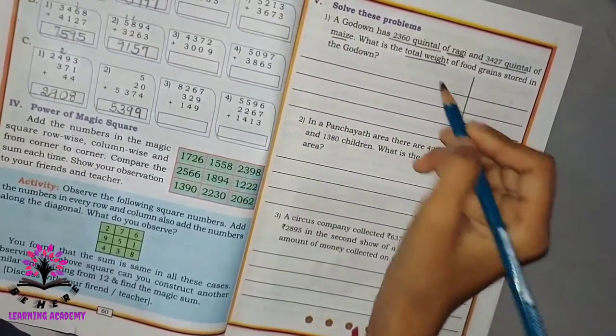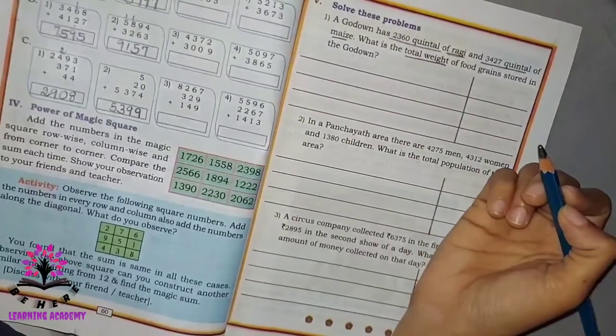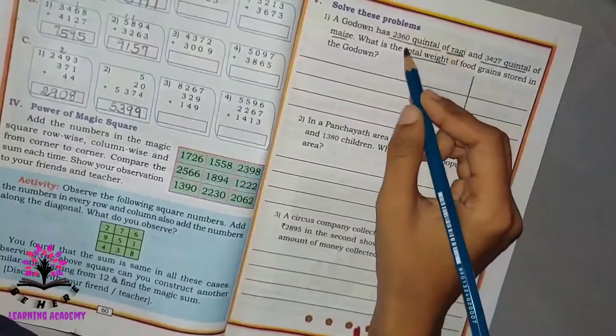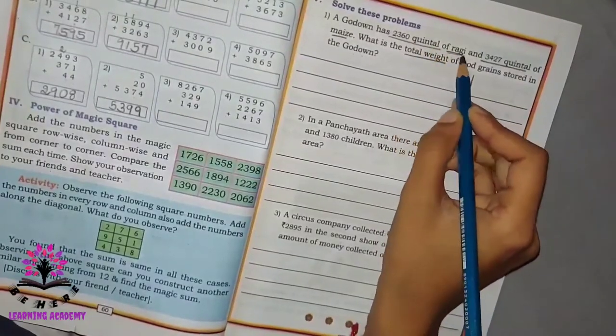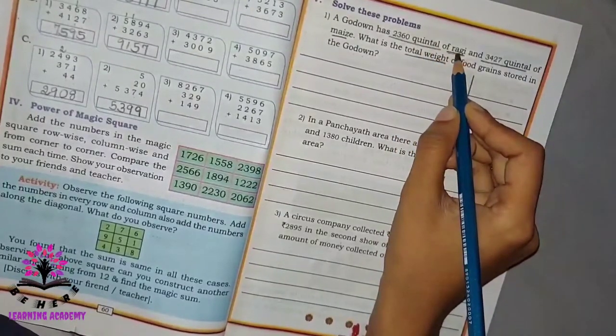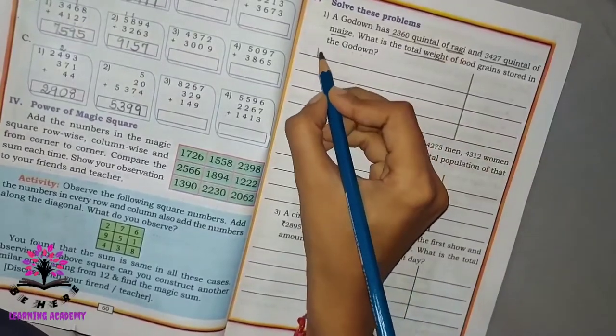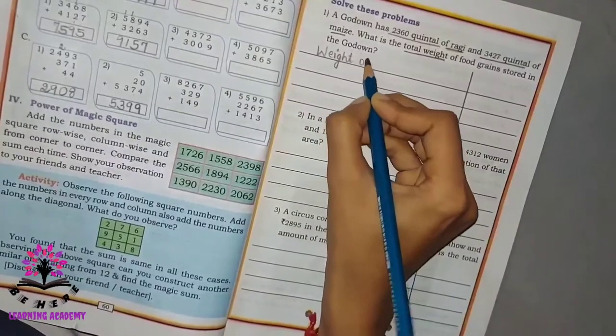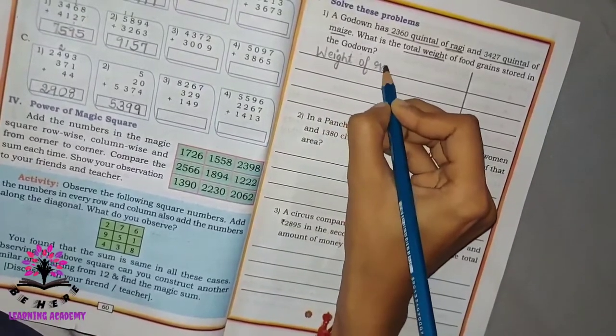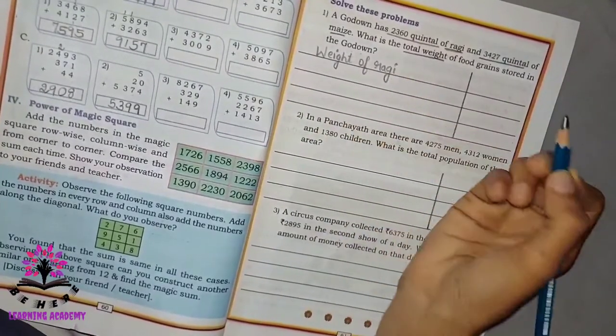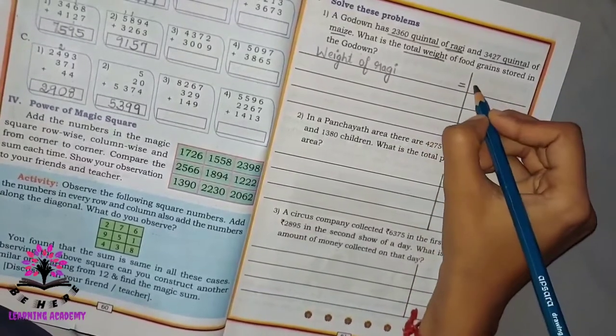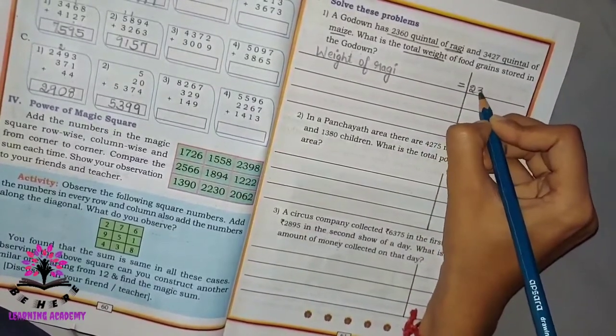First draw a line like this and let us solve the problem. Now, first let us write weight of ragi. How much is it? Weight of ragi is equal to 2360 quintal.